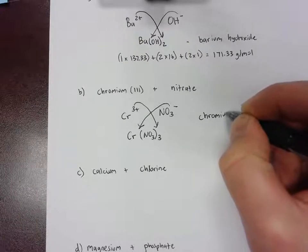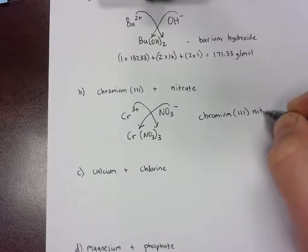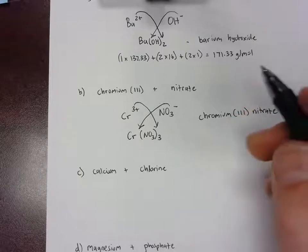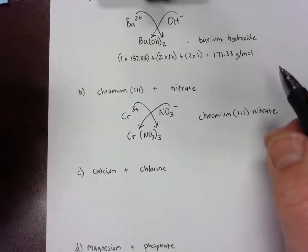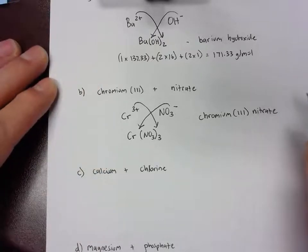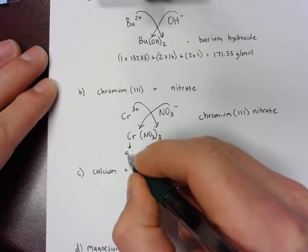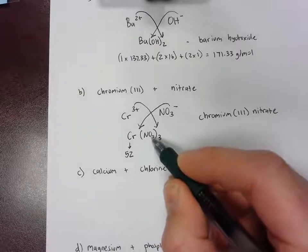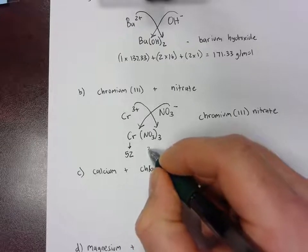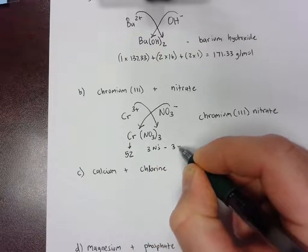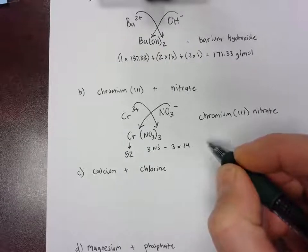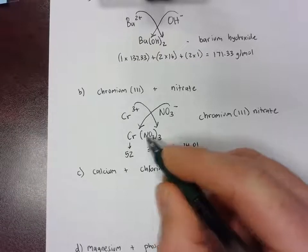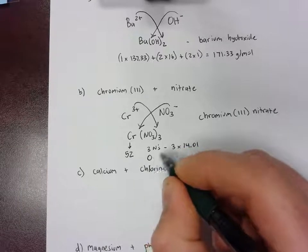Now on to the molar mass of this one. Remember that we can use the periodic table. We find chromium and chromium has a molar mass of 52 grams per mole. Then now we look at inside the parentheses. Remember this three is distributed to everything inside. So let's start with the nitrogen. We have three nitrogens and each nitrogen is 14.01.